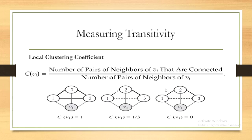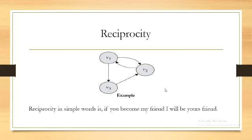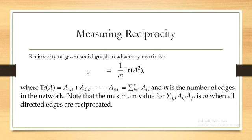Now let us see our second topic: reciprocity. Reciprocity is a simplified version of transitivity because it considers closed loops of length 2, which can only happen in directed graphs. For example, node V1 is connected to V2 and V2 is also connected back to V1 — they follow the property of reciprocity. Have you used Tumblr? If you follow someone and they follow you back, that is a mutual follower. Reciprocity in simple words means: if you become my friend, I'll be your friend.